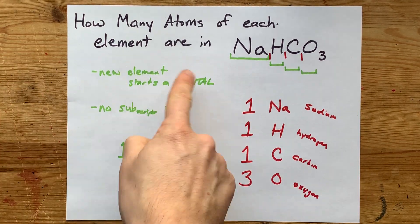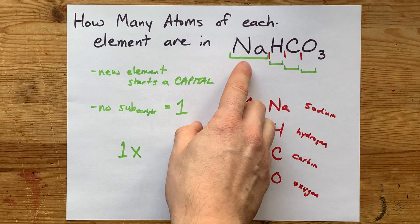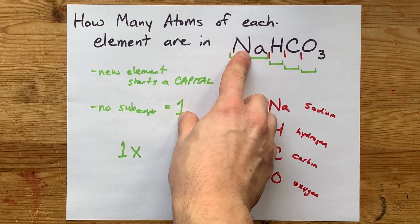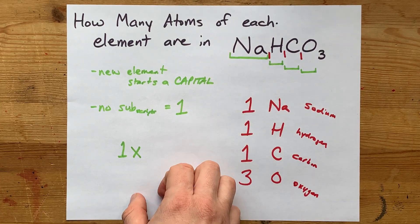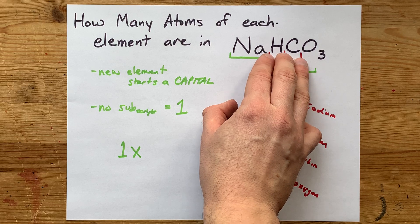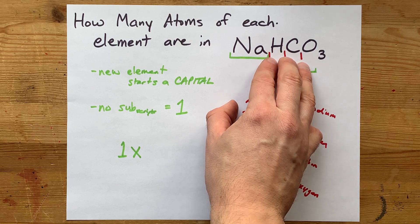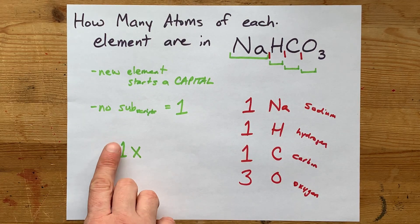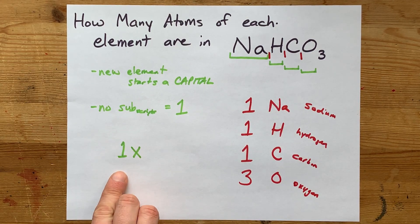So to summarize, new elements always start with a capital letter. If you have a lowercase letter, it's bundled with the capital letter that preceded it. And if there are no subscripts written down and to the right of each of the elements, it's a 1 - the same way there's a hidden 1 in front of every X in algebra.